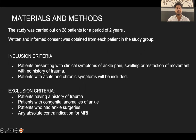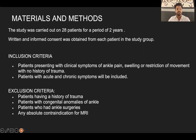Coming to materials and methods, this study was carried out in 28 patients over a period of two years. Written and informed consent was obtained from each patient. Inclusion criteria included patients presenting with clinical symptoms of ankle pain, swelling, and restriction of movement but with no history of trauma, including both acute and chronic symptoms. Exclusion criteria included patients with history of trauma, congenital anomalies of the ankle, prior ankle surgeries, or any absolute contraindication for MRI.